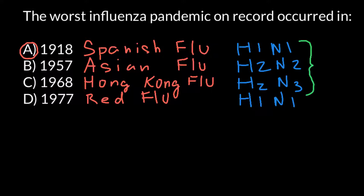I'm going to make a video — maybe tomorrow — that will show you how this virus mutates and explain why it is so difficult to make a flu shot that would be universal and last forever, unlike many other shots that give you immune protection for the rest of your life. The influenza virus can be type A, B, C, and even D, which is not very well known.